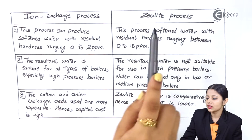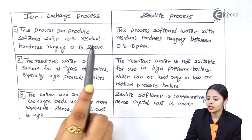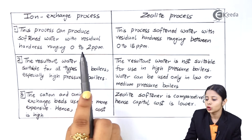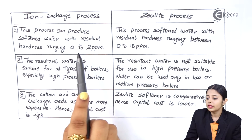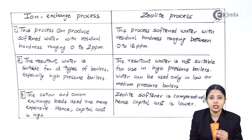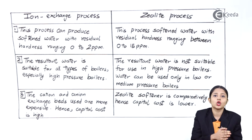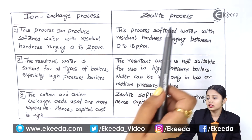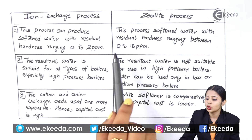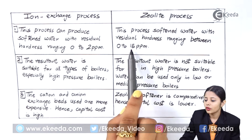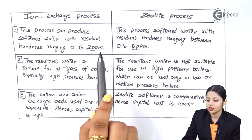First point — Ion exchange process: this process can produce softened water with residual hardness ranging from 0 to 2 ppm (parts per million), meaning the amount of impurities should be only from 0 to 2 ppm. Whereas in the zeolite process, the softened water has residual hardness ranging from 0 to 15 ppm. So the zeolite process leaves more residual hardness than the ion exchange process.